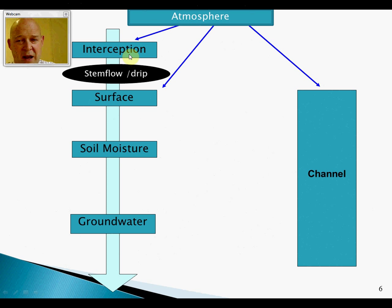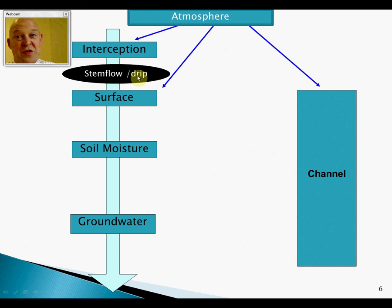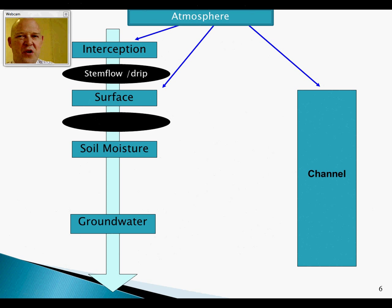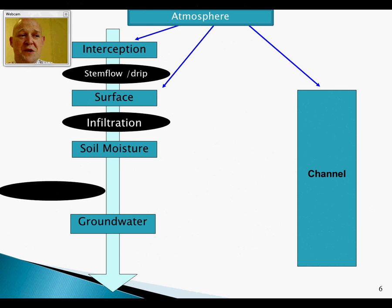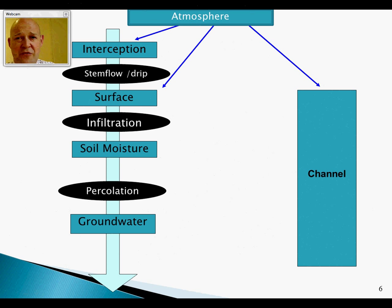Transfer processes through the interception store to the surface include stem flow, when water runs down the stem, and leaf drip. There's also through fall — technically water falling to the surface without touching anything — though it's somewhat redundant. From the surface, infiltration moves water into the soil moisture, and percolation takes it down into the groundwater.